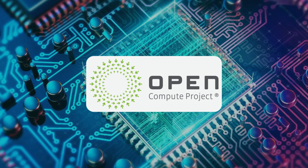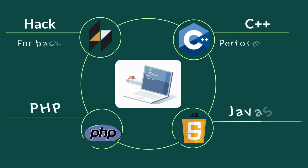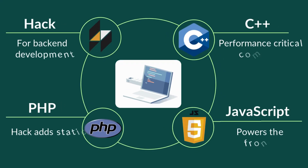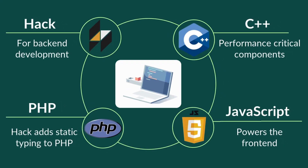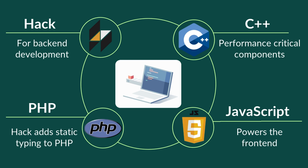When it comes to programming languages, Facebook uses Hack for backend development, which adds static typing to PHP. This helps developers catch errors early. For performance-critical components, C++ is the go-to choice, providing the speed and efficiency necessary for Facebook's vast operations.